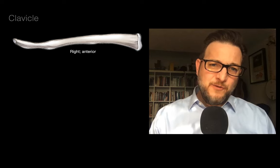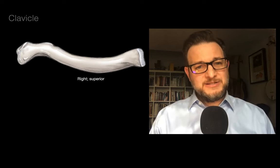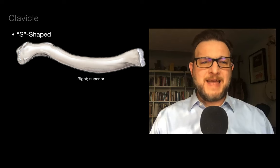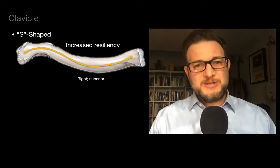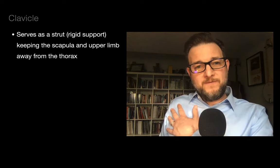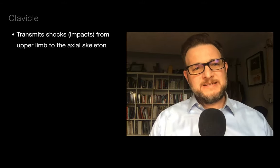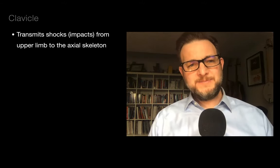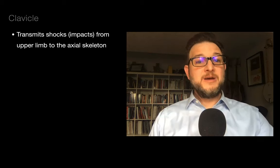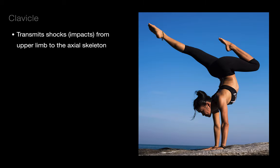In a superior view, you can see that the clavicle is S-shaped, which gives it increased resiliency. The clavicle serves as a strut — a rigid support — keeping the scapula and the upper limb away from the thorax, helping stabilize the upper limb. It also transmits shocks and impacts from the upper limb to the axial skeleton. For example, someone doing a handstand has all the force from the arms transmitted to the clavicles.